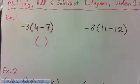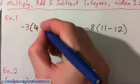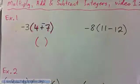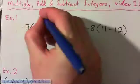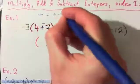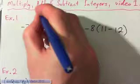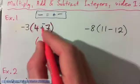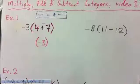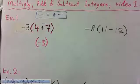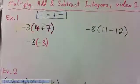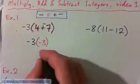Another way is to write subtraction as plus negative — adding the opposite. So the subtract sign becomes plus negative. Now we have positive four plus negative seven, which gives us negative three. So we've got negative three times negative three. Negative times negative is positive nine.